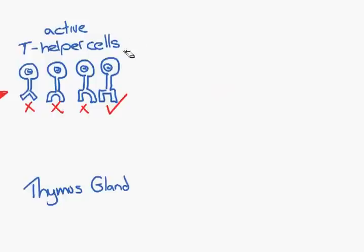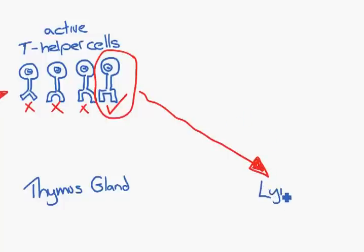This activated T helper cell is cloned a lot because it is activated to clone and make many, many of them and released into the blood. It drifts around in your body, in the blood until it makes it to the lymph node.